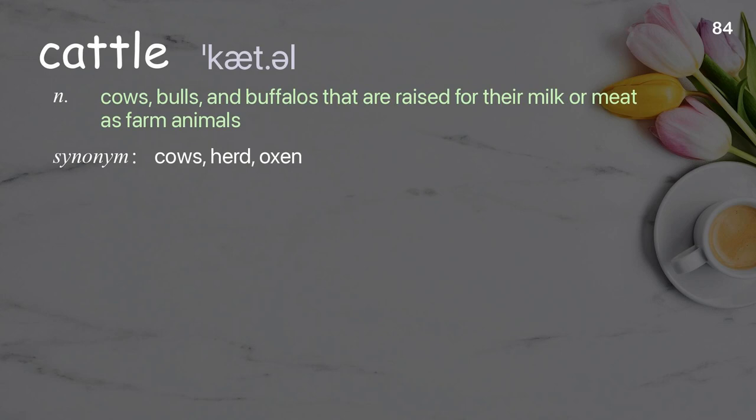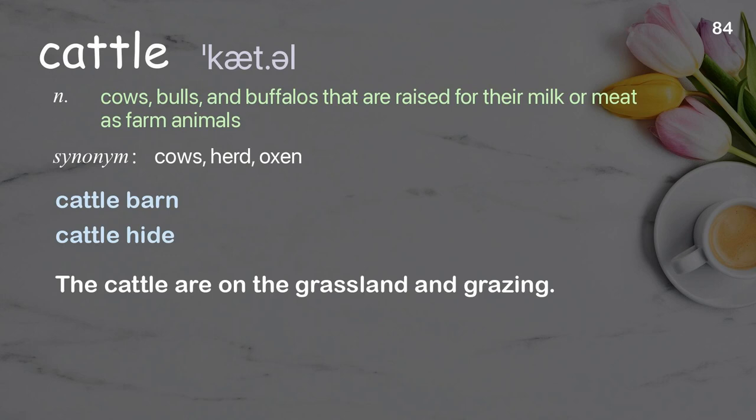Cattle: cows, bulls, and buffaloes that are raised for their milk or meat as farm animals. Examples: cattle barn, cattle hide. The cattle are on the grassland and grazing.